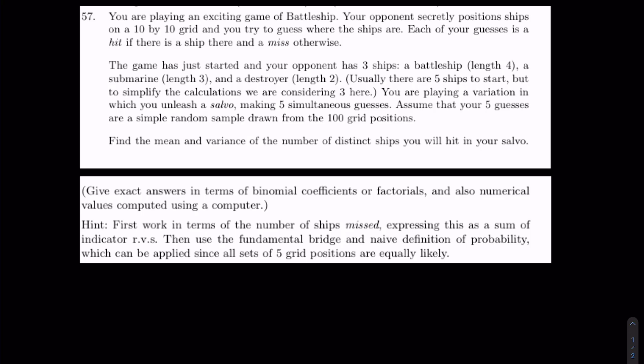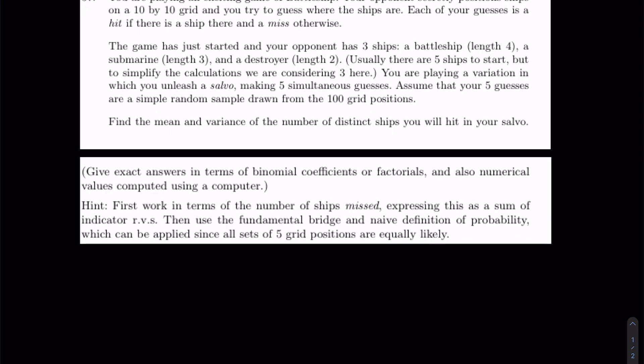We're playing a game of Battleship where our opponent secretly positions ships on a 10 by 10 grid. We are trying to guess where the ships are — each guess is a hit if it hits a ship, and a miss otherwise. We're given that there are three ships: a battleship of length four, a submarine of length three, and a destroyer of length two. We're playing a variation where we make five hits simultaneously.